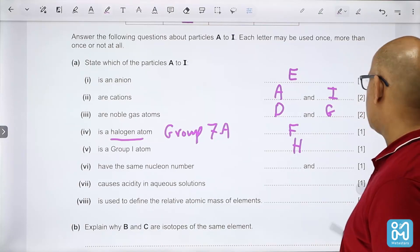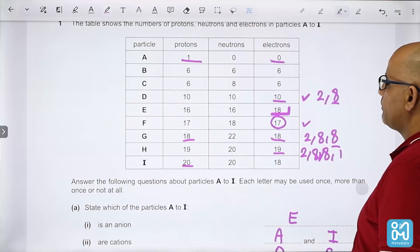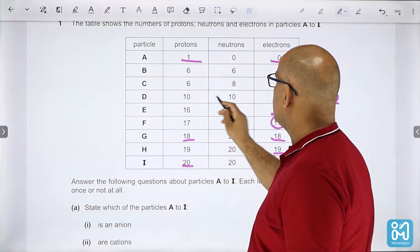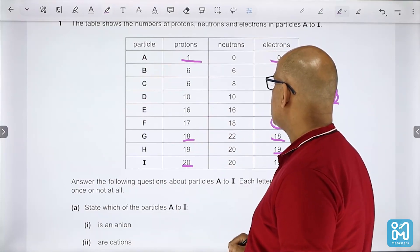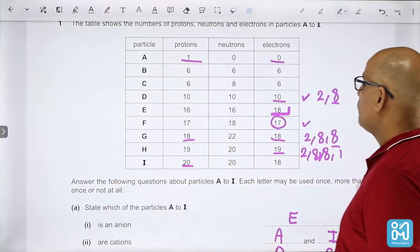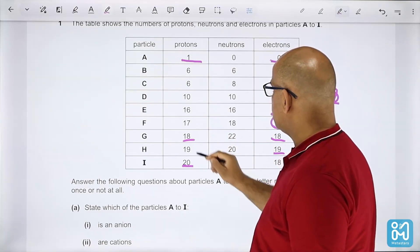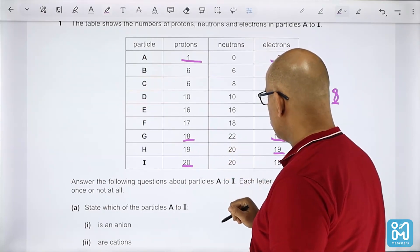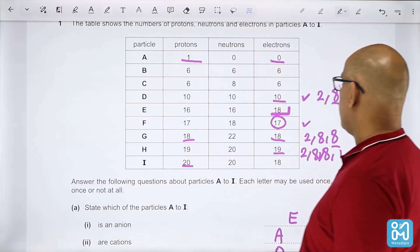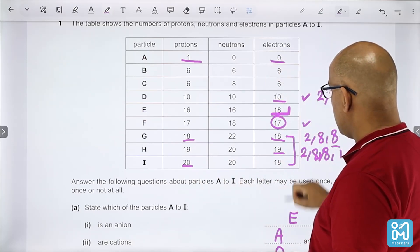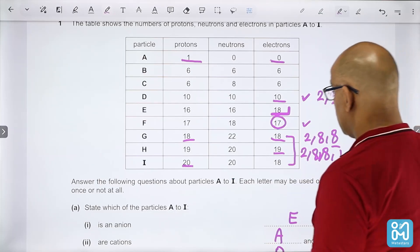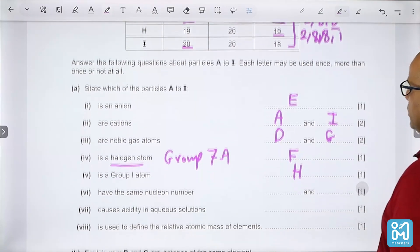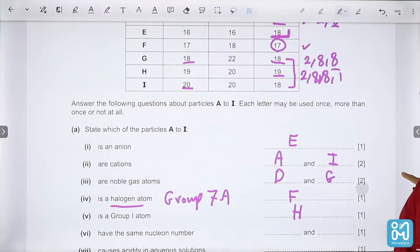Have the same nucleon numbers - nucleon number is protons and neutrons. You can see G has 18 protons and 22 neutrons, which is 40. And H has 19 protons and 20 neutrons, which is 39. When you add the protons and neutrons you will get the same number for G and H.